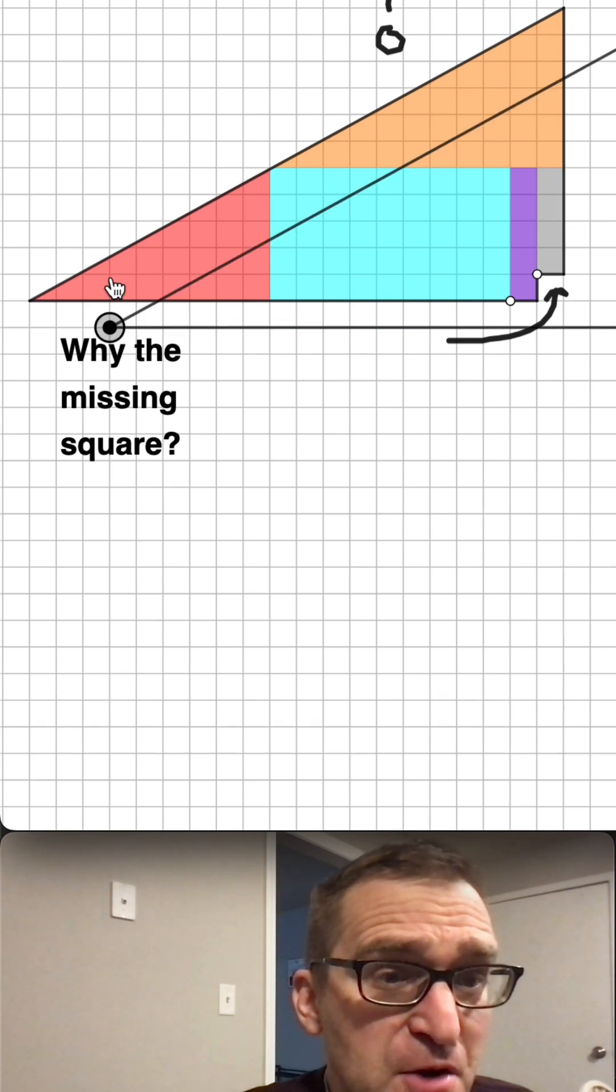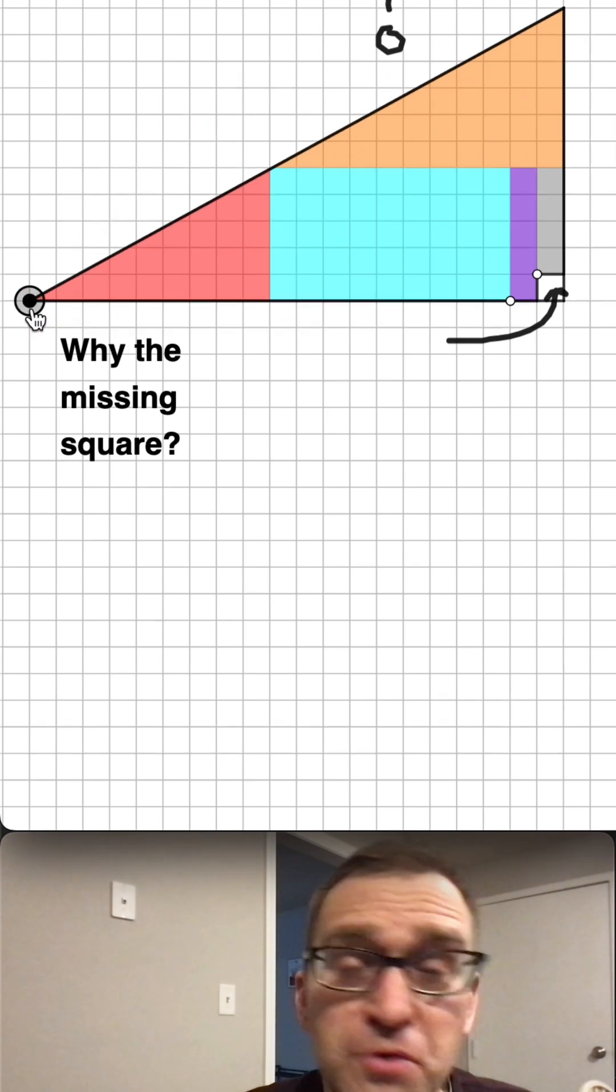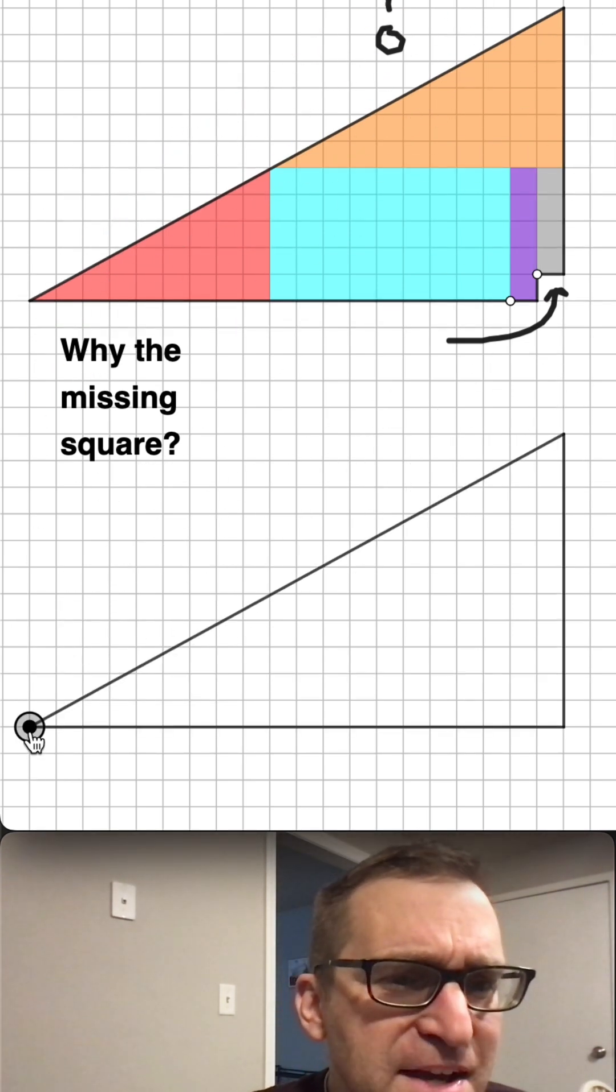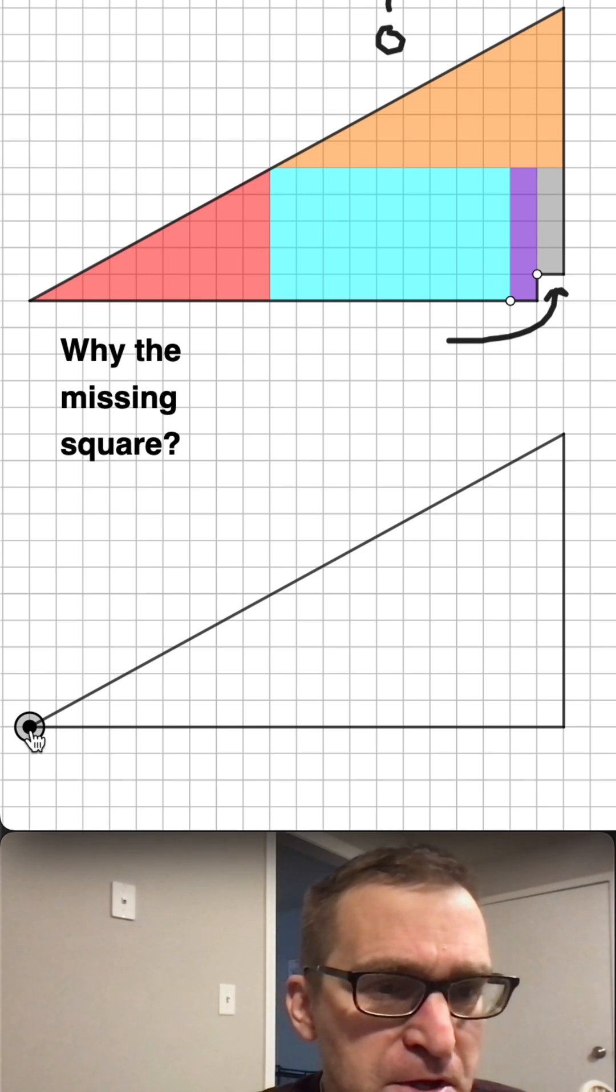Well, if you see, the outlines are the same. The only difference is that one missing square in the corner. So why does this happen? Let's take a peek.